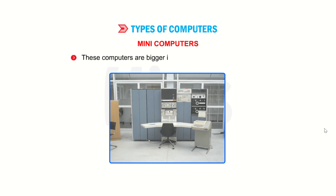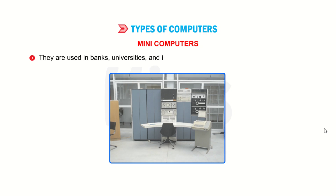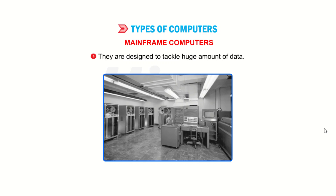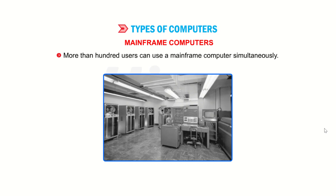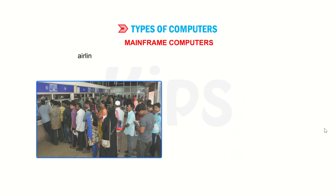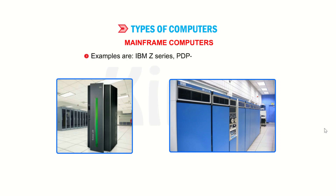Mini computers are bigger in size than microcomputers. They have a higher processing speed and are costlier than microcomputers. These computers are capable of supporting 4 to about 200 users simultaneously. They are used in banks, universities, and other big organizations. Example: PDP-8. Mainframe computers are very powerful, big in size, with large memory and high speed. They are designed to tackle huge amounts of data. More than 100 users can use a mainframe computer simultaneously. They are used in large business organizations, universities, banks, scientific laboratories, airline and railway ticket reservations, and stock exchange markets. Examples include IBM Z series, PDP-10, and System Z10.